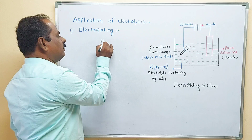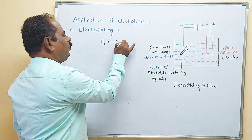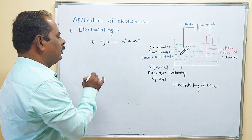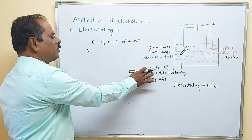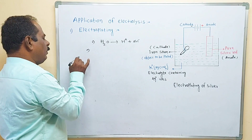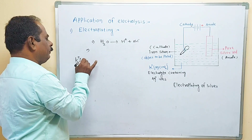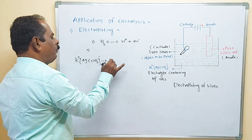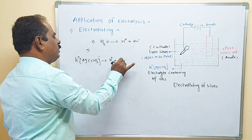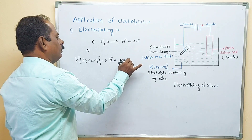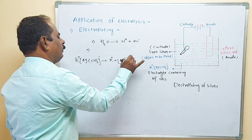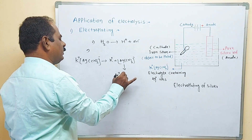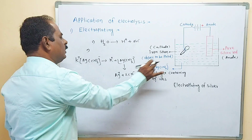When electricity is passed, at the first stage water is electrolyzed to form hydrogen ions and hydroxide ions. Then the silver salt — potassium argentocyanide — is ionized to form potassium ions and argentocyanide ions. The argentocyanide further ionizes to form silver ions and cyanide ions in the solution.